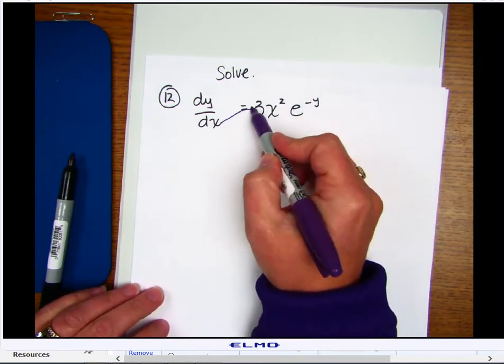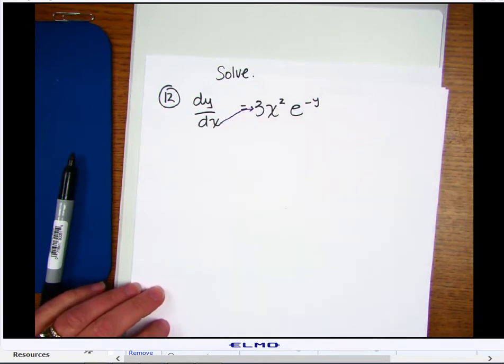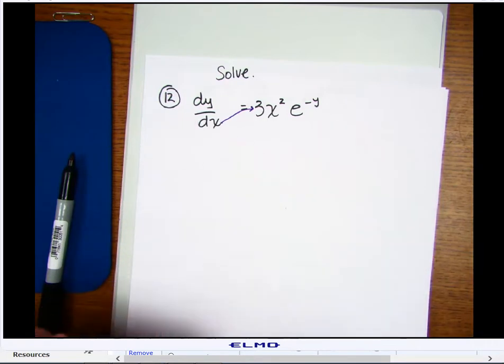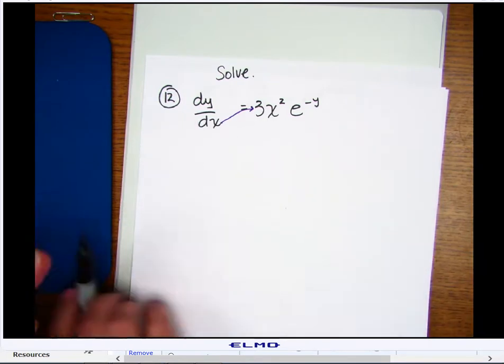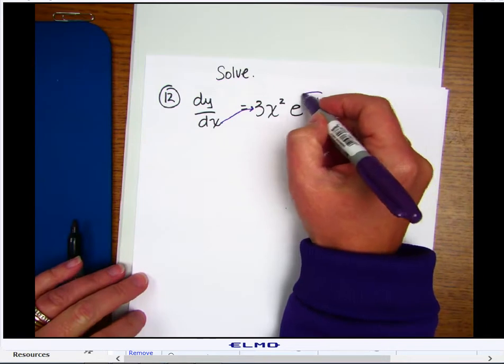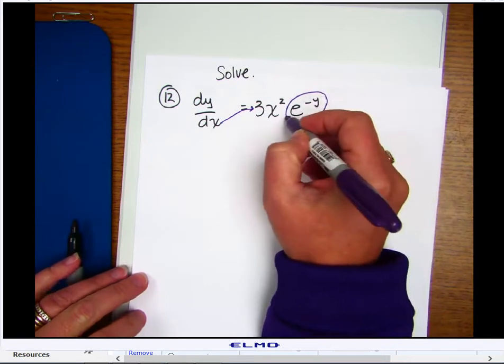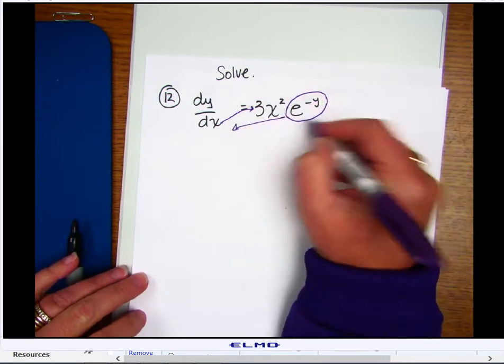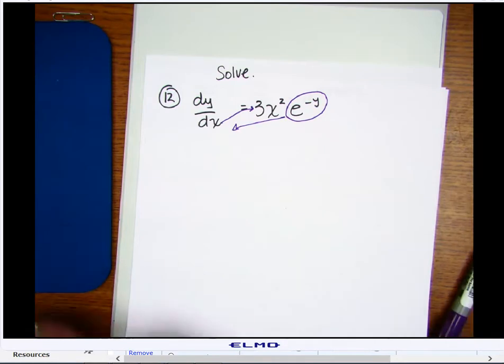So the first thing you're going to want to do is bring your dx to the other side. In other words, multiply both sides by dx. And then, if you have a variable associated with y, or a part of the function, you can move that over. In this case, we would divide both sides by e to the minus y.